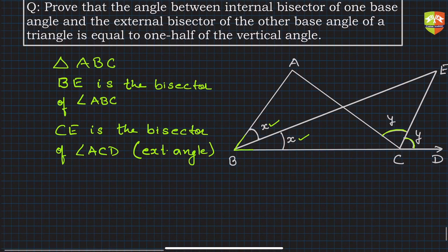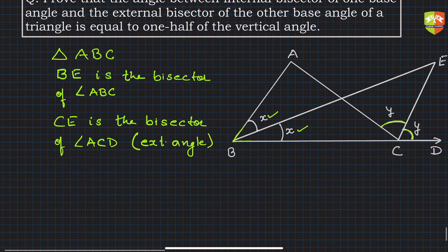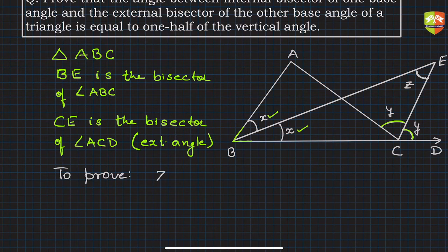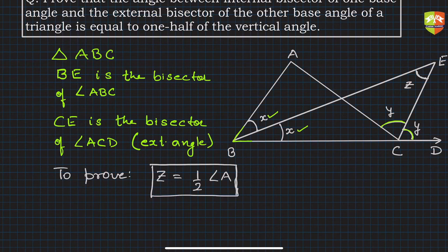Now we have to establish what is to be proved. We need to prove that the angle between the internal bisector and the external angle bisector — let's call it z — is equal to one half of angle A. So z is equal to half angle A. This is what we need to prove.